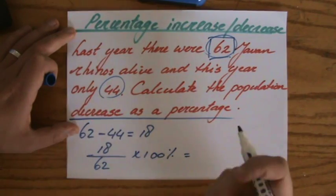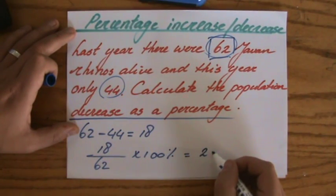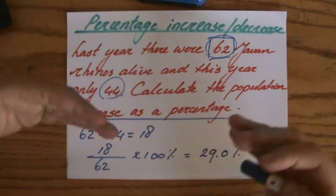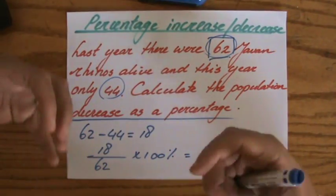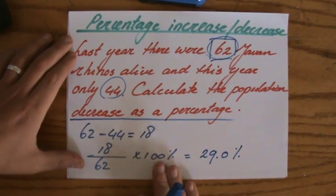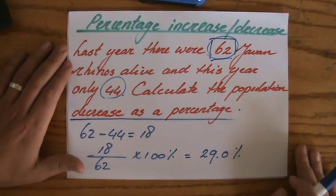Round that correctly to three significant figures: 29.0 percent. So the percentage decrease, the change in value over the original value times by 100, in this particular scenario, a very sad scenario, is 29.0 percent.